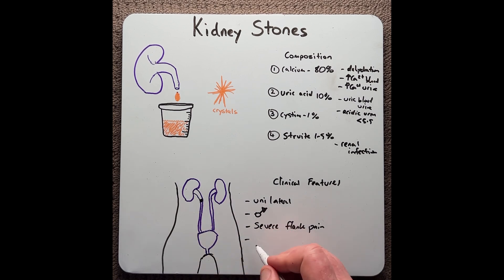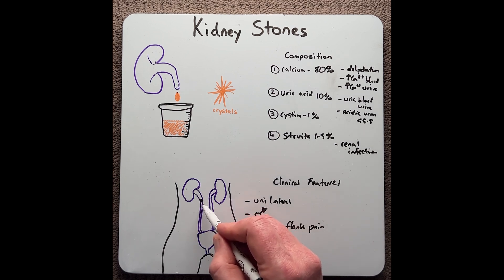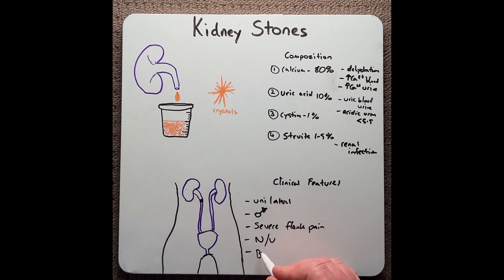This is usually associated with nausea and vomiting, and because the stone scrapes the ureta on the way down, we may also see blood in the urine.